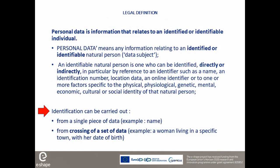Personal data is information that relates to an identified or identifiable individual — that is the legal definition. What you have to remember is that identification can be carried out from a single piece of data, for example obviously a name, but also from a crossing of a set of data that may not be personal data by itself. Take an example: a woman living in a specific town associated with her date of birth. Gender, location, or date of birth are not personal data in themselves, but put together they can lead to the identification of this person, and therefore they are personal data.